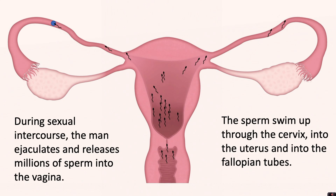Because an egg has only been released out of one ovary, some of the sperm will go into a fallopian tube that doesn't contain an egg. However, some of the sperm will go into the correct fallopian tube that happens to contain the egg that has been released that month.